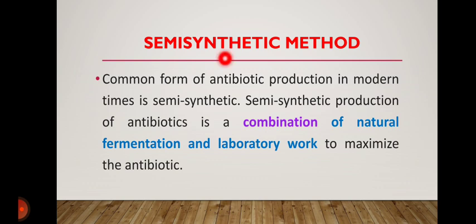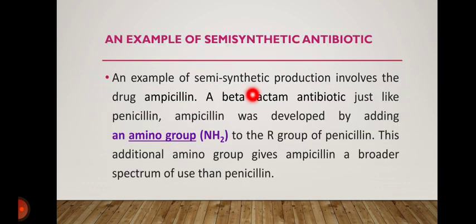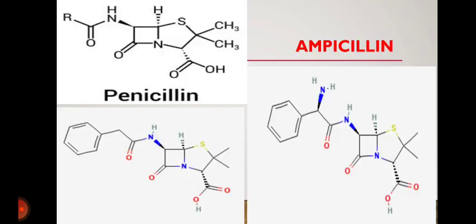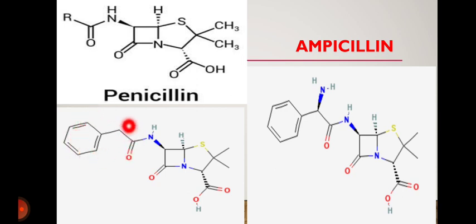The semi-synthetic method is very interesting — it is a combination of both natural fermentation and laboratory work. For example, in the production of semi-synthetic antibiotics like ampicillin, an amino group is added to penicillin. If you see the structure, this is the common penicillin structure: this is the beta-lactam ring, this is the thiazolidine side chain, and here you see the N-H-C-O-R group, where R represents benzyl penicillin.